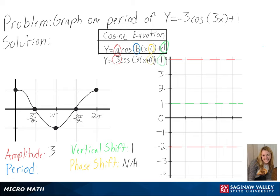Then we can solve for our period, or 2 pi over b. We can see here our b is 3, so we will get 2 pi over 3 as our period.